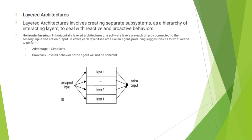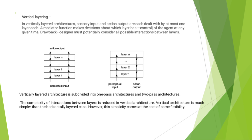The last one is Layered Architecture. Layered architecture involves creating separate subsystems as a hierarchy of interacting layers to deal with reactive and proactive behaviors. In horizontal layer architecture, the software layers are each directly connected to the sensory input and output. The advantage is simplicity, but the drawback is that overall behavior of the agent may not be coherent. In vertical layer architecture, sensory input and action output are each dealt with by at most one layer. Vertical layer is subdivided into one-pass and two-pass architecture. The main drawback is that the designer must consider all possible interactions between layers, though complexity is reduced compared to horizontal architecture.